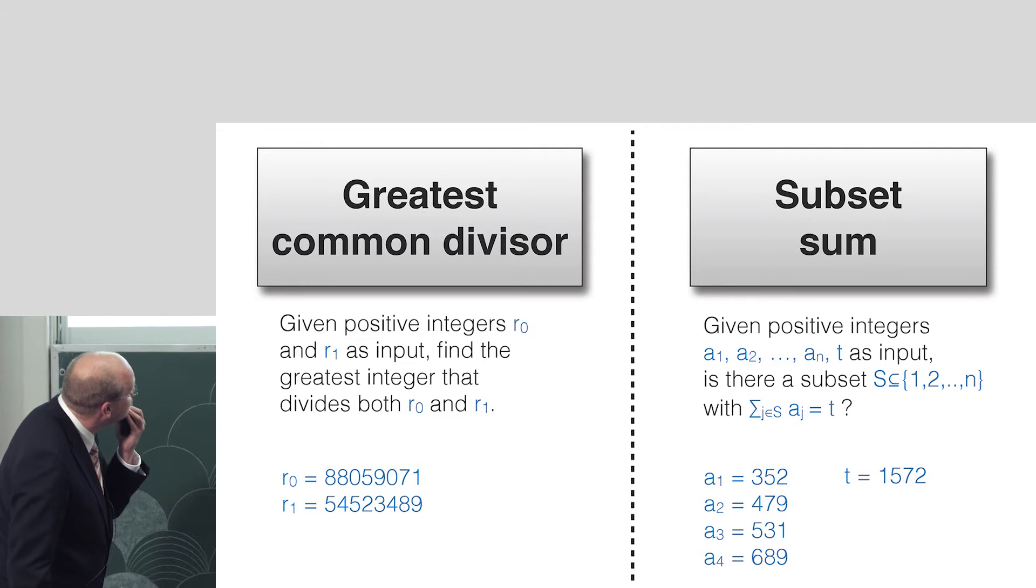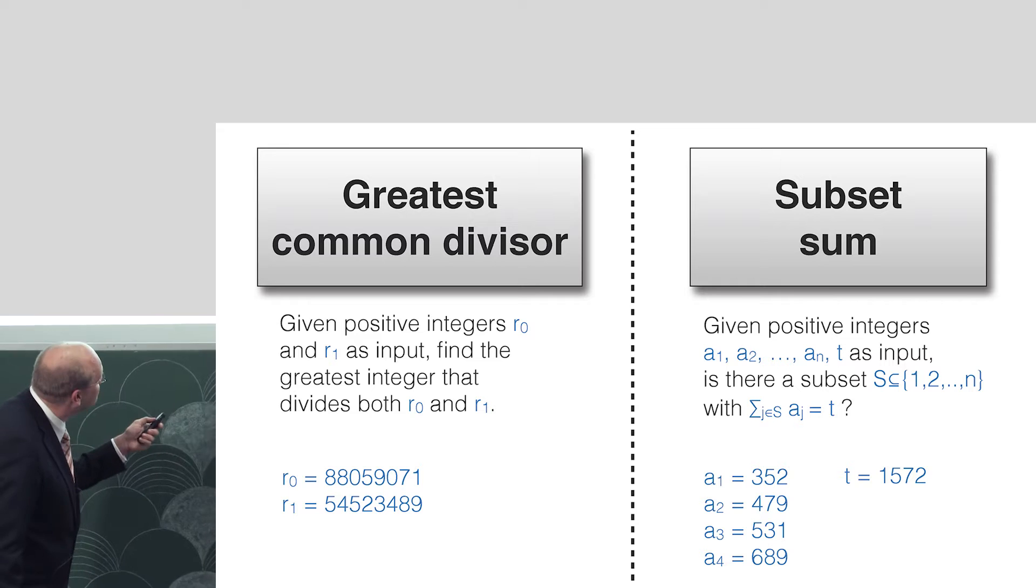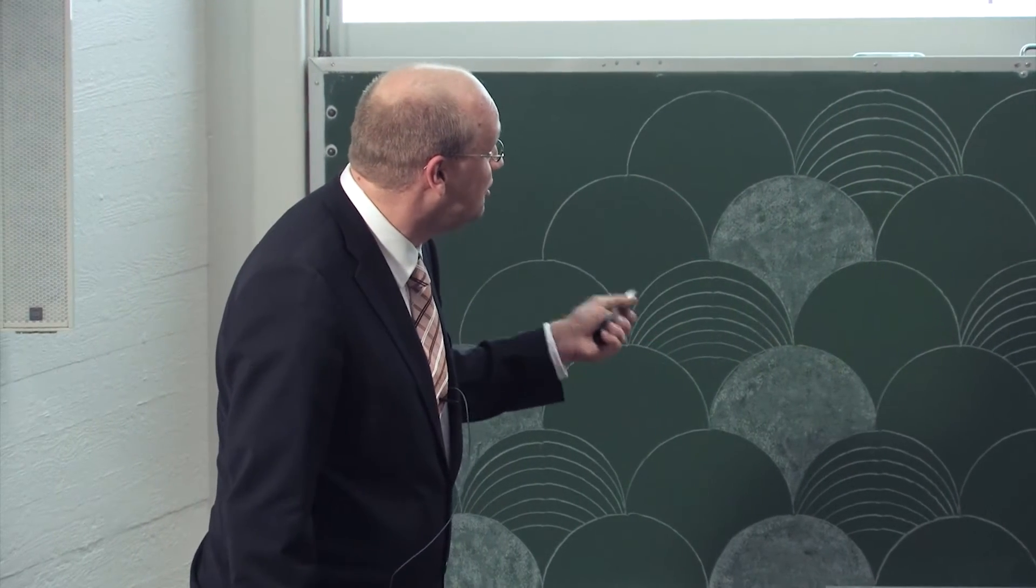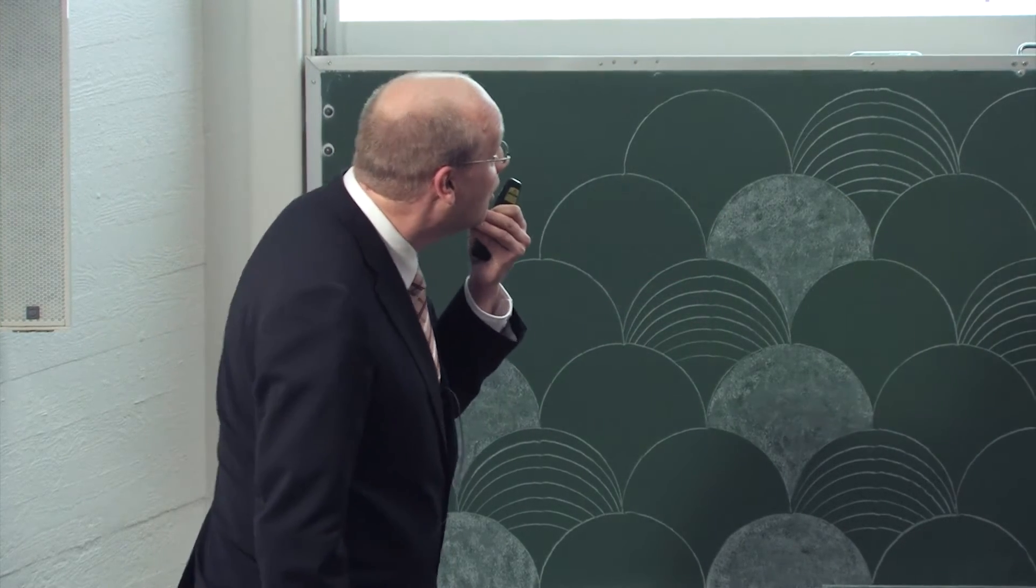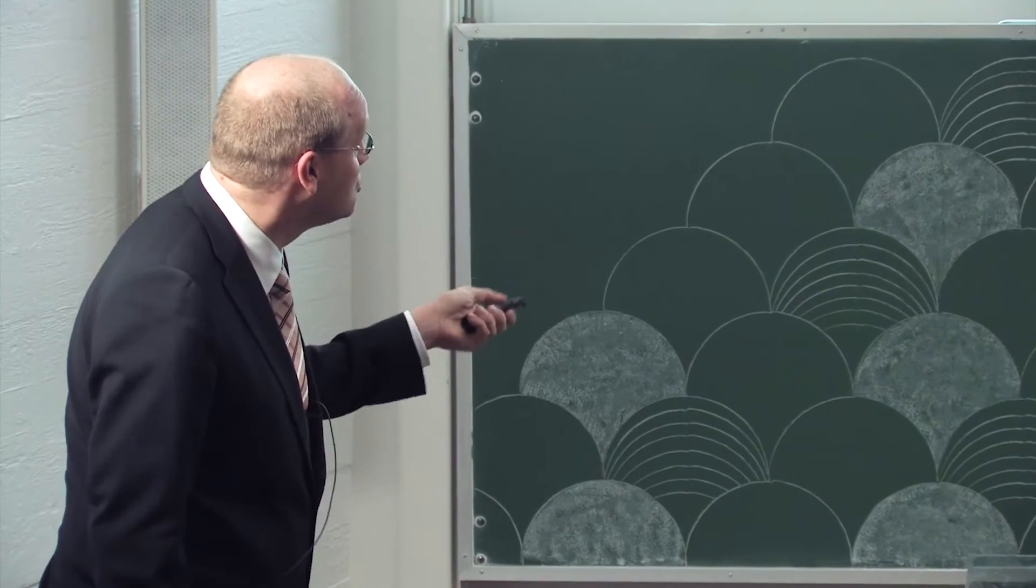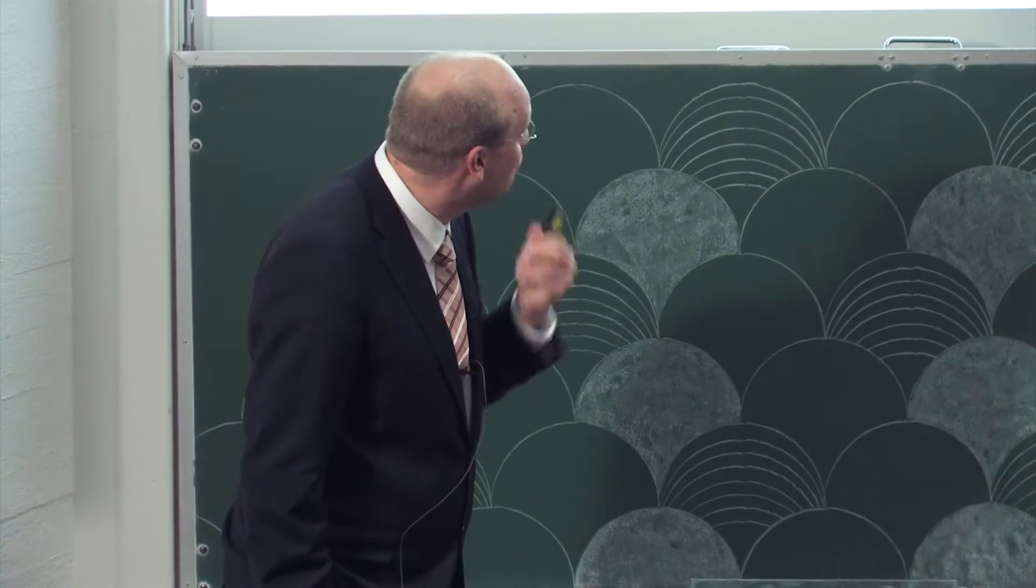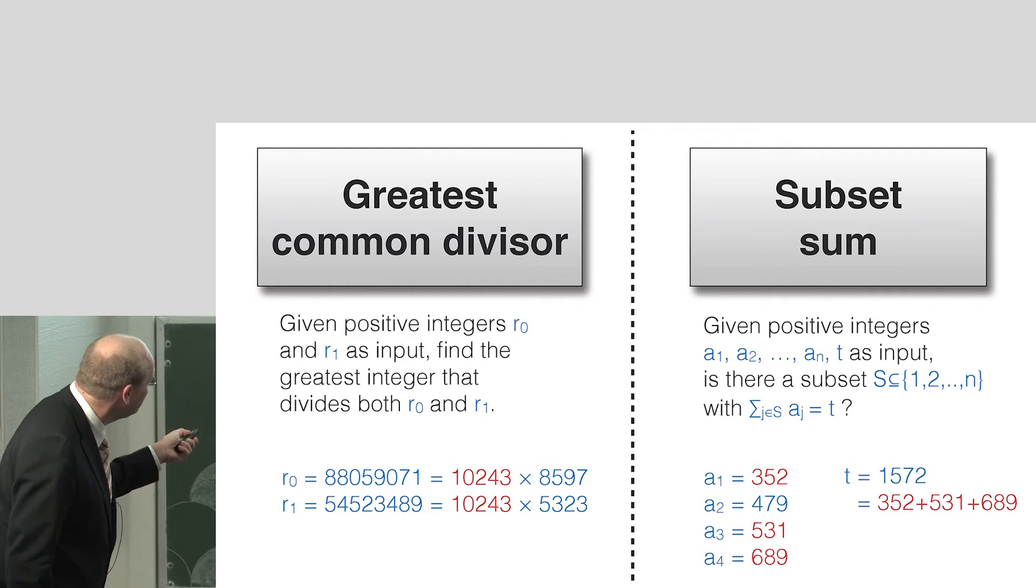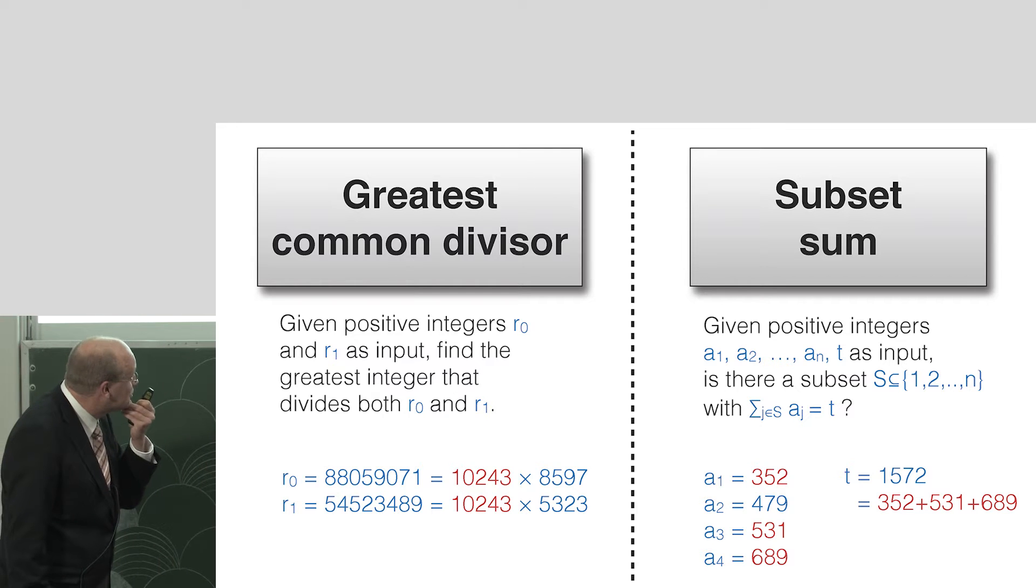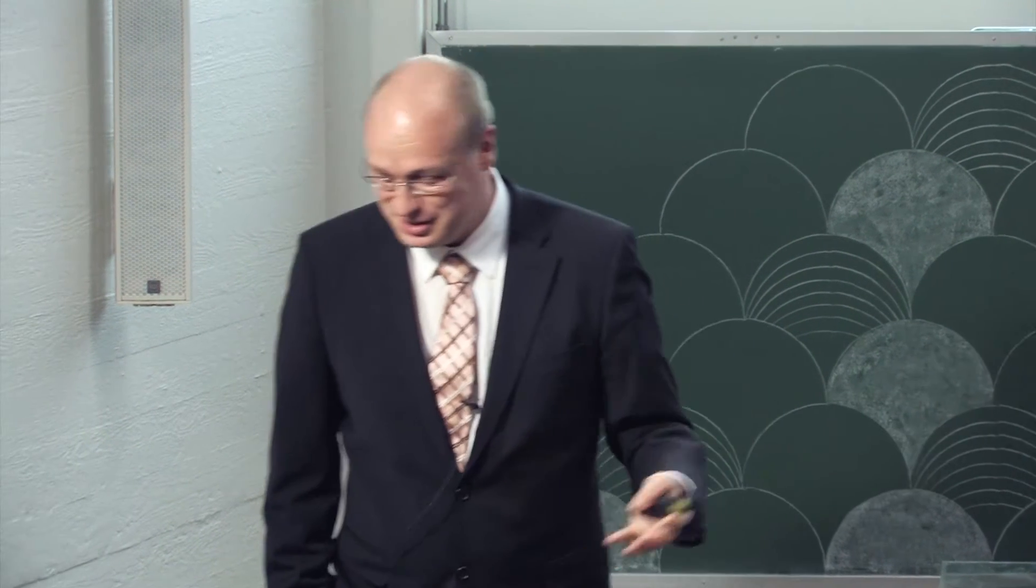Find the greatest integer that divides both of these. On the right-hand side, we also have a problem involving integers. Given a few positive integers here, is there a subset that sums to the target? Can I pick some of these integers here, so that they sum to this particular number? These are small example instances meant to illustrate what an algorithm in general needs to do. Let's just look at two solutions. Here we actually see that it's 10,243, the greatest common divisor. And here, it's these three different integers that sum up to the target. So far, so good.